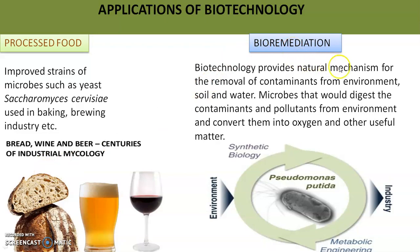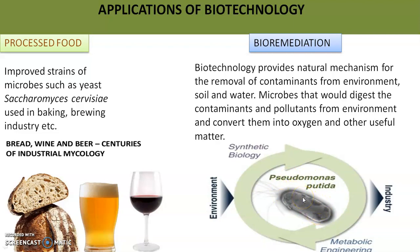Bioremediation is a natural mechanism of removing contaminants from the environment — soil or water — by using microbes. Genetically engineered microbes are used to digest the contaminant or pollutant, breaking down its bonds and converting them into useful products. These microbes grow by digesting the contaminants, and the products obtained are useful for the environment. Pseudomonas putida is one such genetically modified bacterium, also called a superbug.